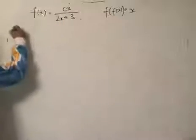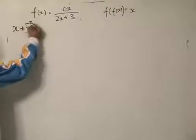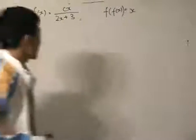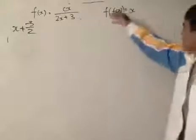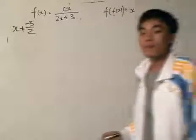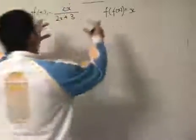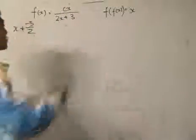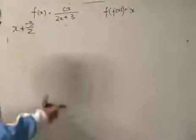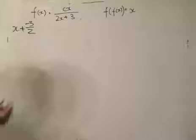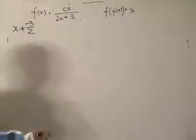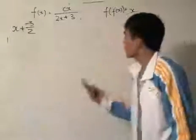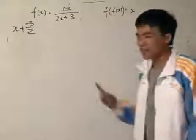Now we know that x cannot equal -3/2, because that would make the denominator zero and be invalid. But we need to think of a value of c such that this condition is satisfied. When you look at the question, you see the formulas are difficult to manipulate, but you should be clear on what we're trying to find.